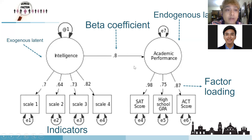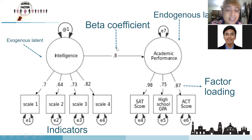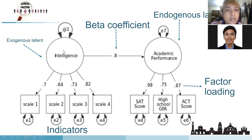The beta value varies between 0 and 1 — the higher the better. For example, a value of 0.8 means there is a strong effect of intelligence on academic performance. But for the beta coefficient, you cannot justify only by looking at the beta itself — you must also check the p-value to determine whether the relationship is significant.